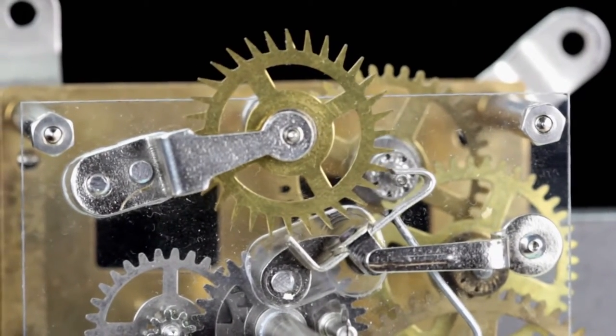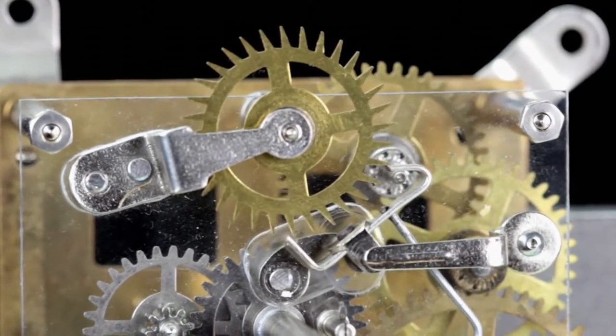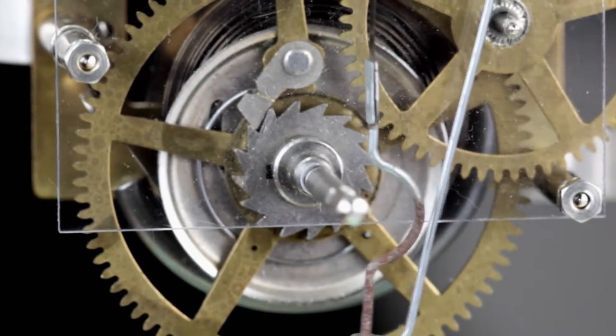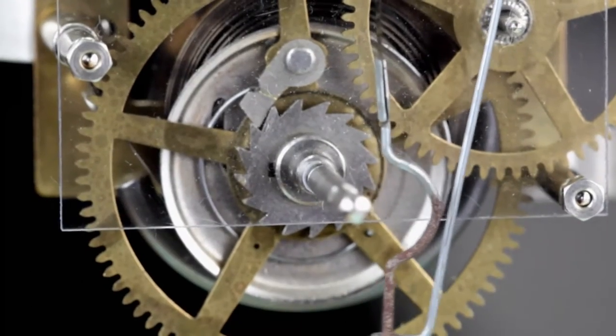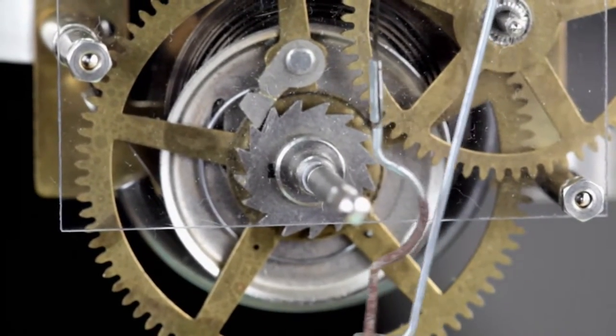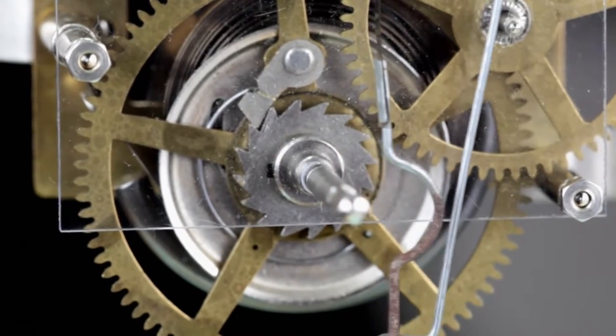The escape wheel is always the last wheel in the going train. Traditionally, wheel number one is the largest wheel in the going train. It carries the power source and is referred to as the great wheel. It is always the first wheel in the train.